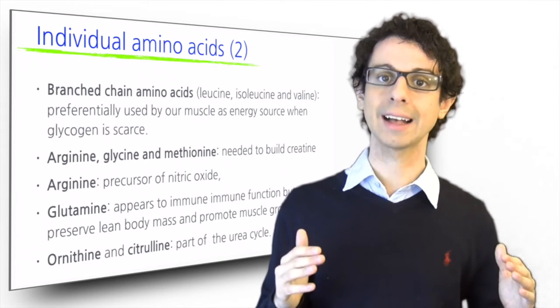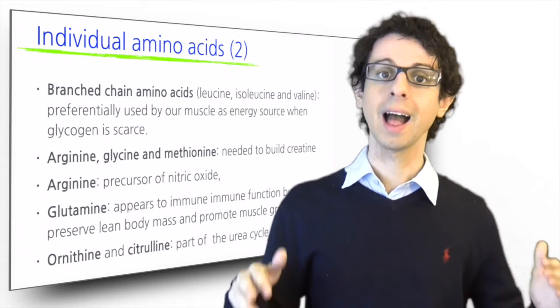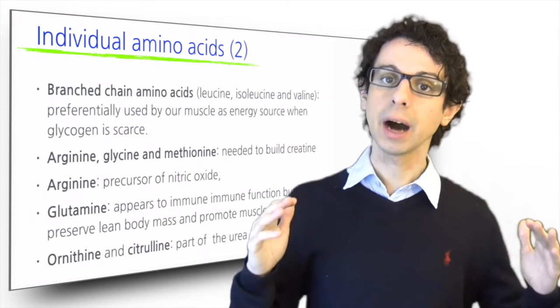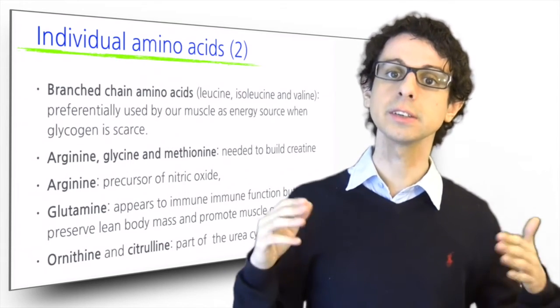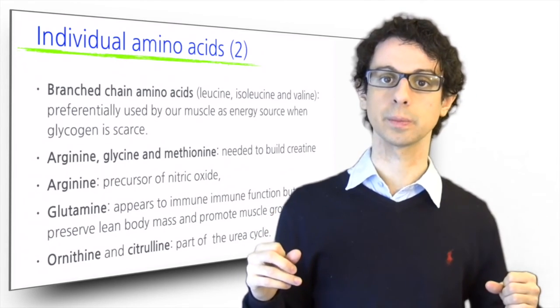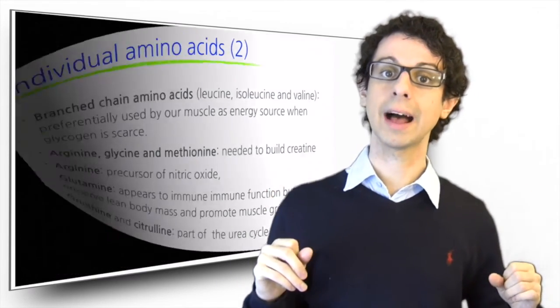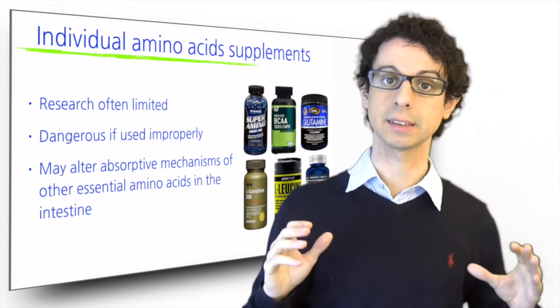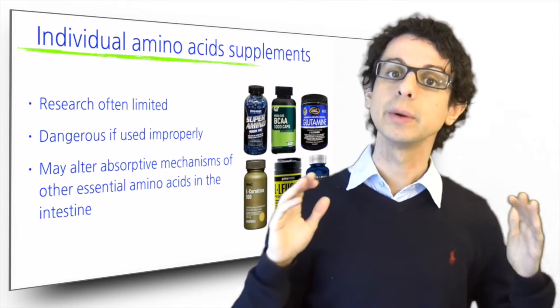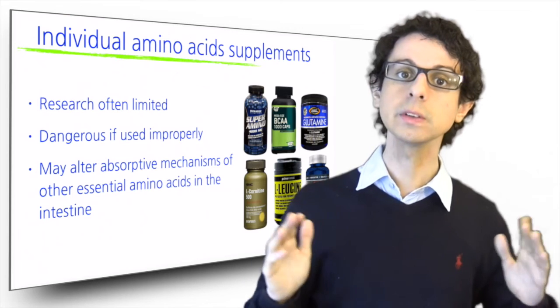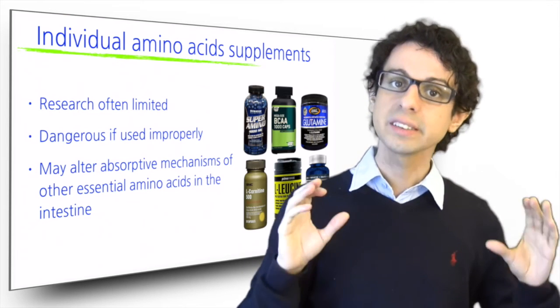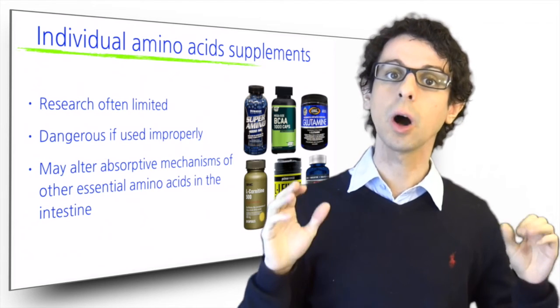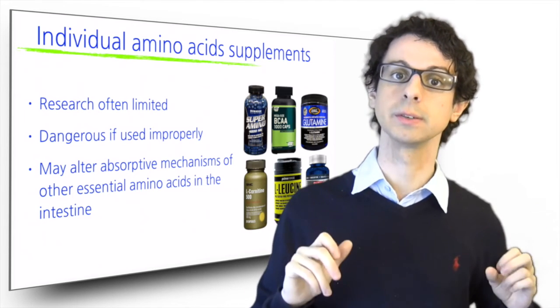On top of the 20 amino acids used for protein synthesis, there are a few others that our body needs to regulate specific pathways such as ornithine and citrulline in the urea cycle. Although some amino acids are sold individually as supplements, research is often limited, and we need to be careful not to confuse single supplements with the therapeutic value of whole foods. Single amino acid supplements are almost always dangerous if used improperly.